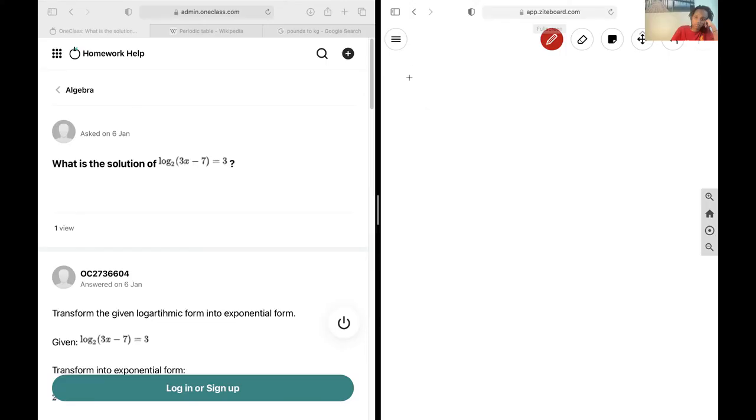Okay, next up we have log₂(3x - 7) = 3. First up, we are going to want to write this in a form of log₂ something is equal to log base 2 of something.